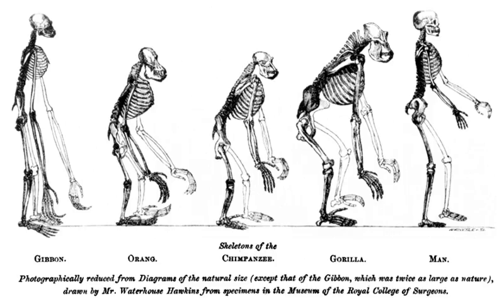Microevolution is the change in allele frequencies that occurs over time within a population. This change is due to four different processes: mutation, selection, gene flow, and genetic drift.